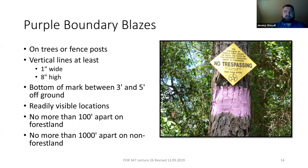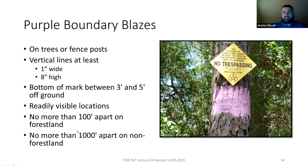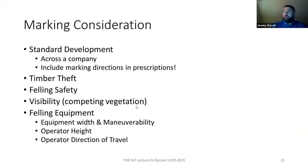The legal stipulations specify a vertical line at least one inch wide and eight inches high, with the bottom of the mark three to five feet off the ground. You'll often see it not meeting exact specs, but if someone's got purple paint on a boundary, whether it fits the legal stipulation or not, they don't want you in there — treat it the same as a trespassing sign. In forest land they're technically supposed to be 100 feet apart; in central or west Texas rangeland or open woodlands, they can be 1,000 feet apart.